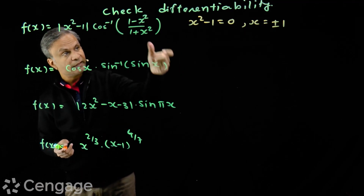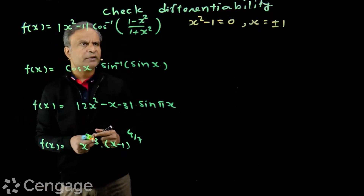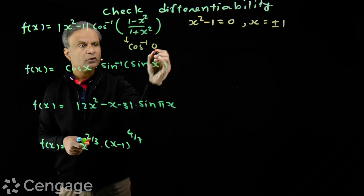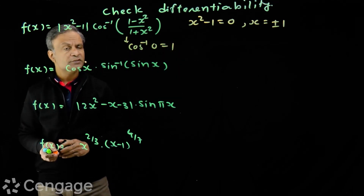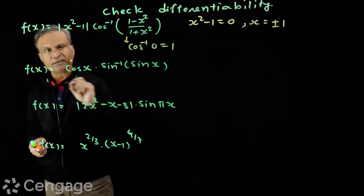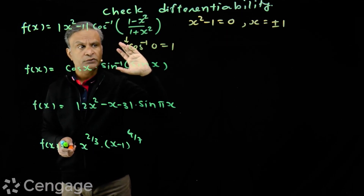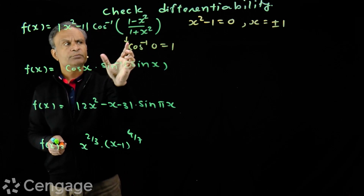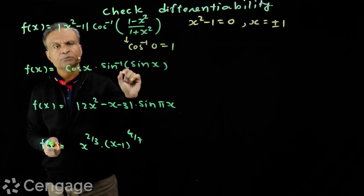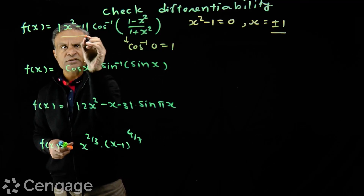Let's check whether the other factor is zero at x = ±1. For x = ±1, the second function gives cos⁻¹(0), and cos⁻¹(0) equals 1 — this is non-zero. So the function is definitely non-differentiable at ±1. If the second factor had been zero there, the product could have been differentiable. But since it's non-zero, we have two points of non-differentiability from this factor.